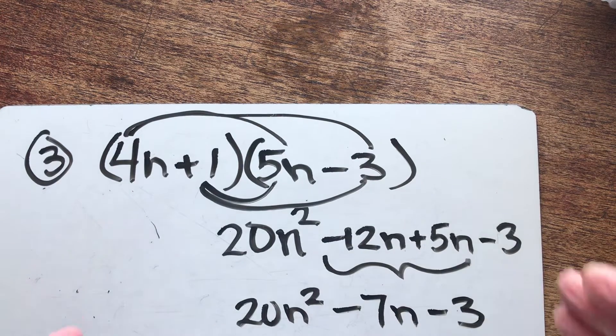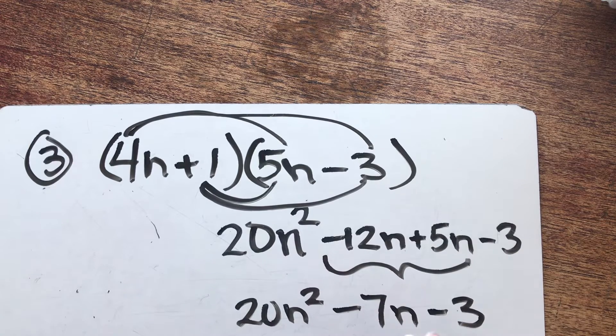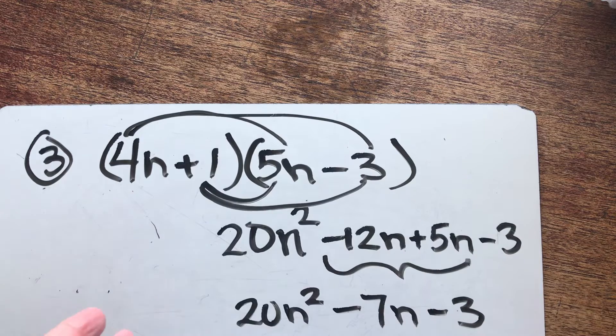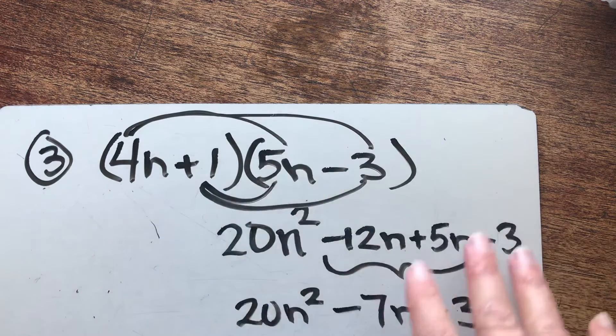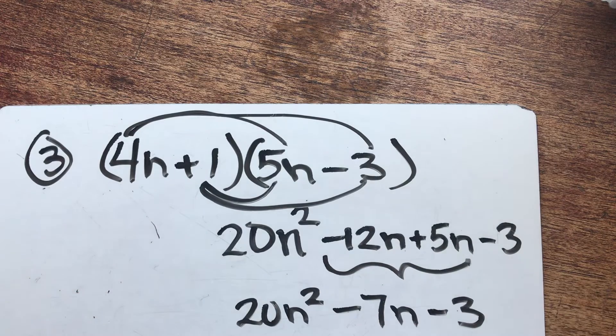Now take a look at that trinomial. We have the N squared first, the regular N second, and the last guy is called a constant, and he has no Ns. That is the order I want your answer, and I want all of this work shown if you're using this distributive technique. Awesome.